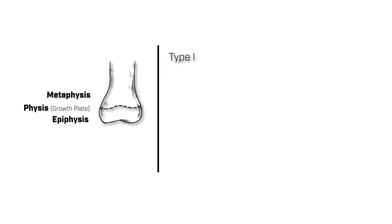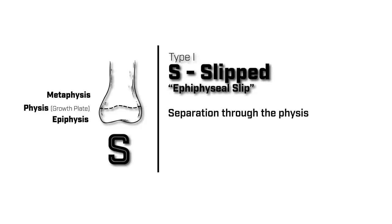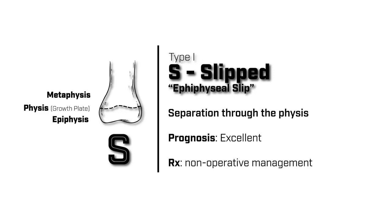A type 1 Salter-Harris fracture is a separation through the physis, or growth plate. Typically, it's a separation through the epiphysis and physeal elements from the metaphysis. The way to remember this is the S portion of SALTER, which stands for slipped. Prognosis for this type of fracture is excellent, and management is often non-operative.